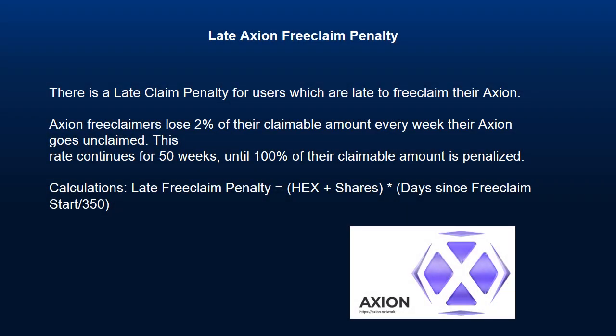Late Axion Free Claim Penalty: There is a late claim penalty for users who are late to free claim their Axion. Free claimers lose 2% of their claimable amount every week their Axion goes unclaimed. This rate continues for 50 weeks until 100% of their claimable amount is penalized. The calculation is: late free claim penalty = HEX shares × days since free claim start / 350.